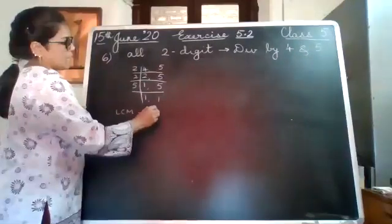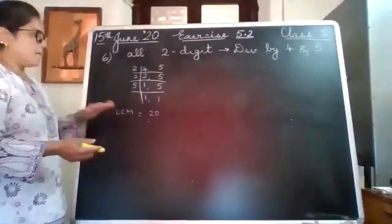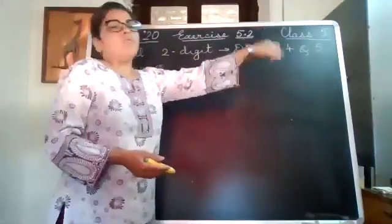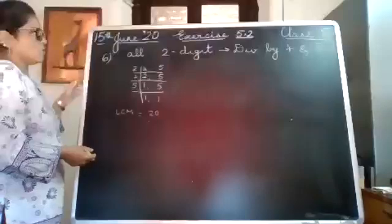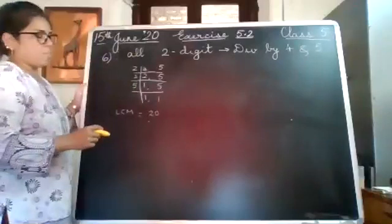4 times 5 is 20. Now all the multiples of 20 will be divisible by 4 also and by 5 also. But we want only the multiples of 20 which are two digit numbers.